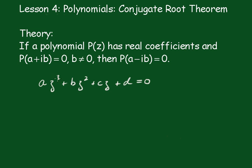Therefore, (az³)* + (bz²)* + (cz)* + d* = 0*. Now the conjugates of constants are just the constants.